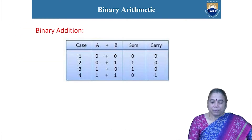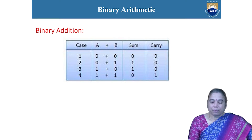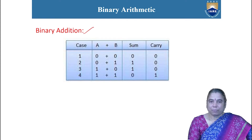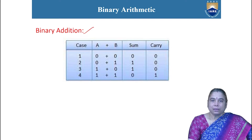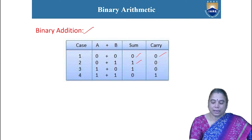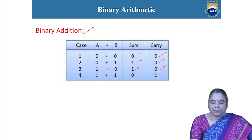First, we will look into the basic binary arithmetic — what are the basic operations that can be performed on binary numbers. The first operation is binary addition. The rules applied during binary addition are: 0 plus 0 gives a sum of 0 with a carry of 0. When 0 plus 1 is added, the sum is 1 and the carry is 0. Whenever 1 plus 1 is added, the sum is 0 and the carry is 1.